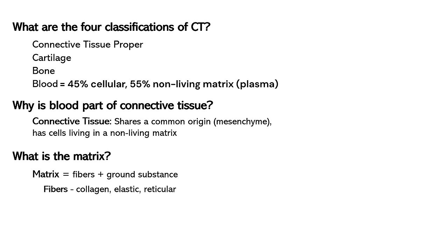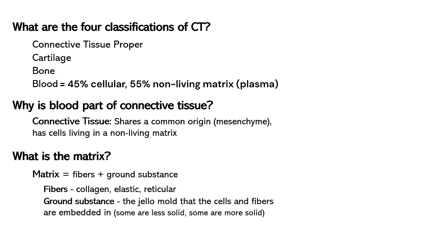The other part of the matrix is ground substance, which is essentially a jello mold that the cells and fibers are embedded within. Some ground substances are less solid, some are more solid depending on what they are made of. The ground substance in blood is called plasma and it's 99% water, so it's a fluid. In connective tissue proper it's a gel — not quite fluid, not quite solid. In bone, the ground substance is calcified, so it is very solid.